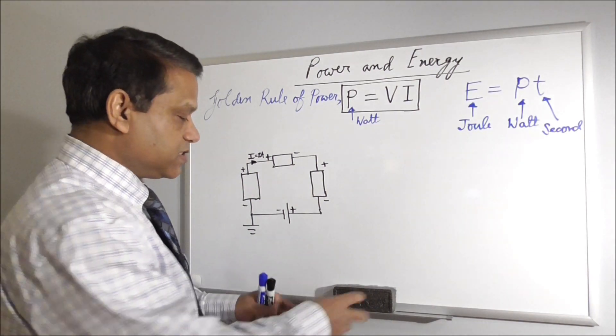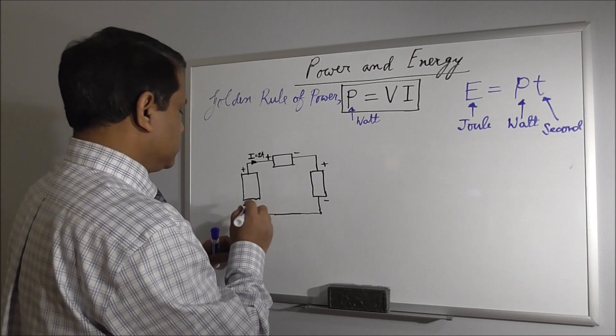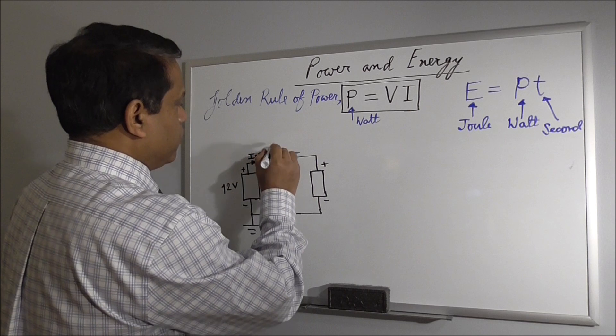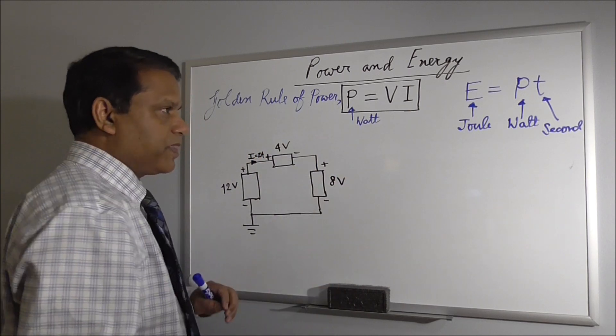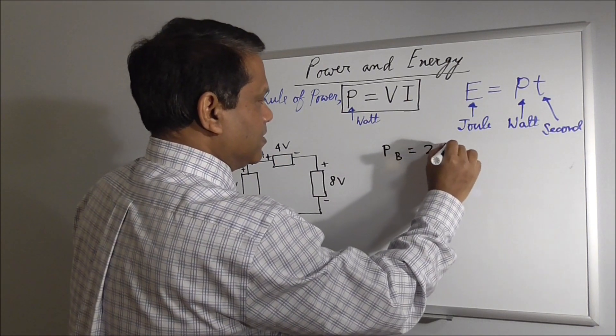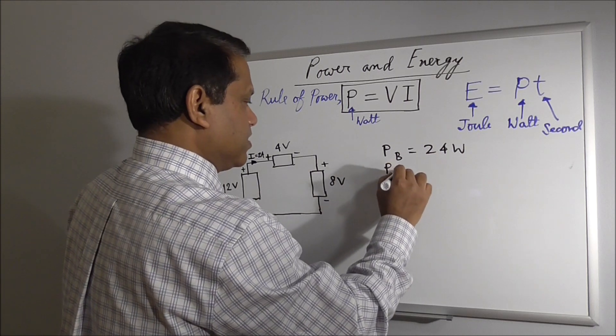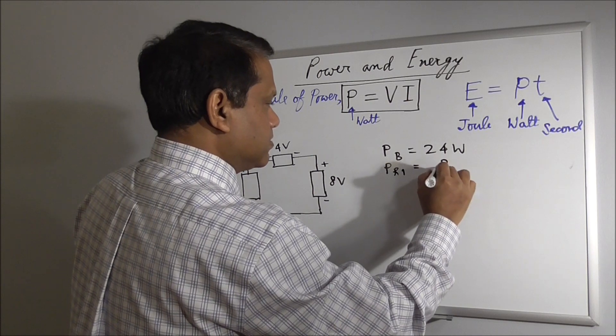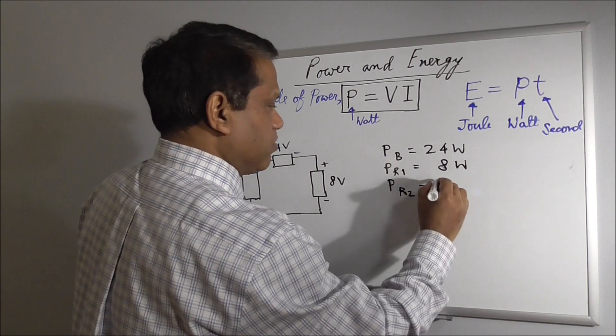Let's go back to our previous structure. It was 12 volt, it was 4 volt, and it was 8 volt. P battery was 24 watt. And it was PR1 was 4 times 2, 8 watt. And PR2, 16 watt.